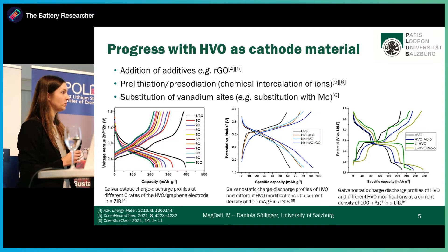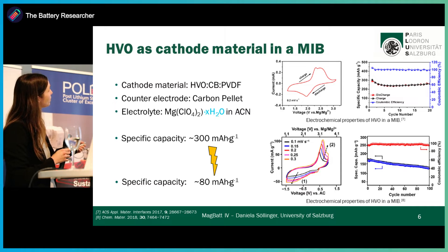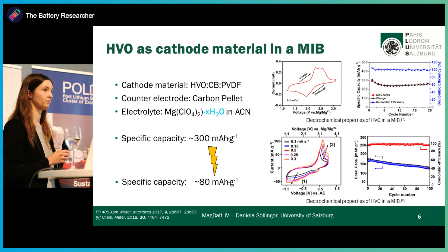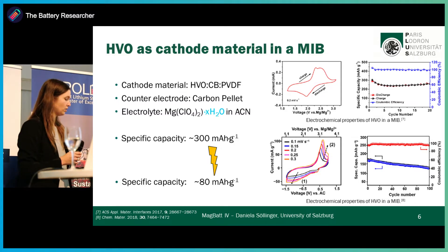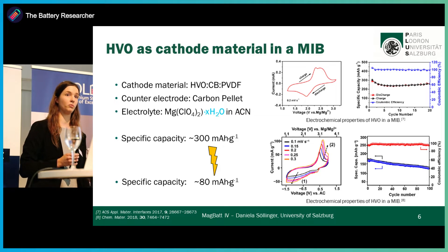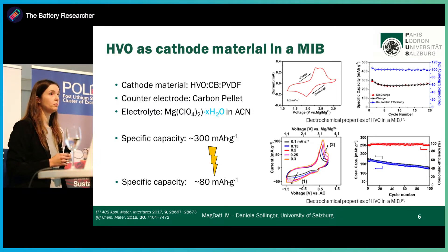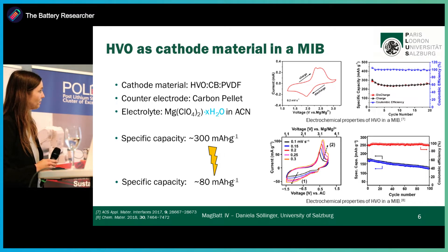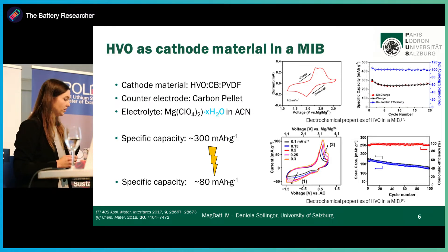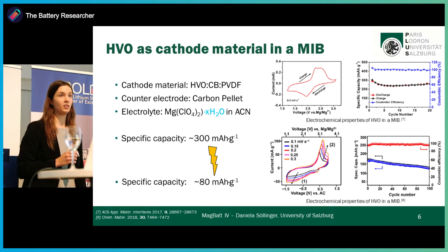Hydrated vanadium oxide as a cathode material in a magnesium-ion battery was first investigated by Tang's working group. They used a carbon pellet as counter electrode, a magnesium perchlorate, and acetonitrile as electrolyte. With this setup, they reached a specific capacity of around 300 mAh/g, showing that hydrated vanadium oxide is also a suitable cathode material in a magnesium-ion battery. Another work was published around one year later by Rasguide Lami and his working group. They achieved a specific capacity of around 220 mAh/g, but only at a higher temperature of approximately 60°C. At room temperature, they only achieved around 80 mAh/g, which is approximately four times lower than the specific capacity Tang's working group received.